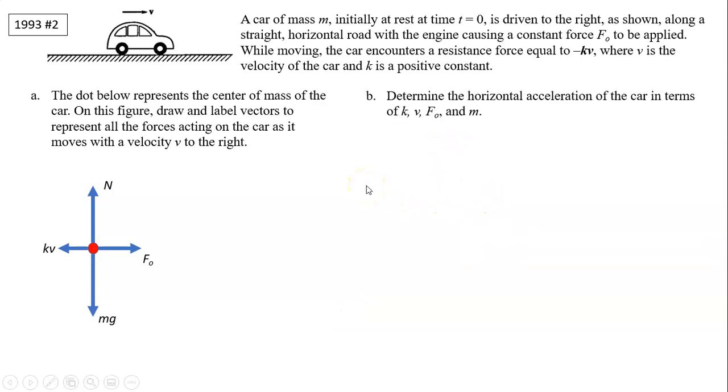Part B: Determine the horizontal acceleration of the car in terms of k, v, F0, and m. According to Newton's second law, the sum of the force in the x direction only, because y cancels, equals ma because acceleration is only in the x direction. And the force in the x direction is F0 minus kv equals ma. So we can solve for a, it's just F0 minus kv over m.